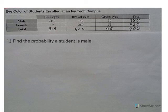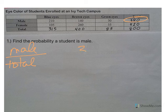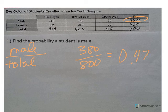First off, basic probability: find the probability a student is male. We are talking about the males over the total — 380 over 800. Going to three decimal places, that gives a probability of 0.475, which is less than half.